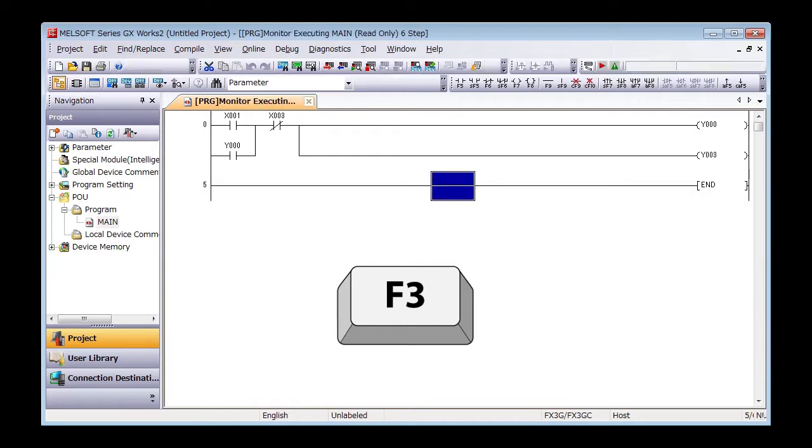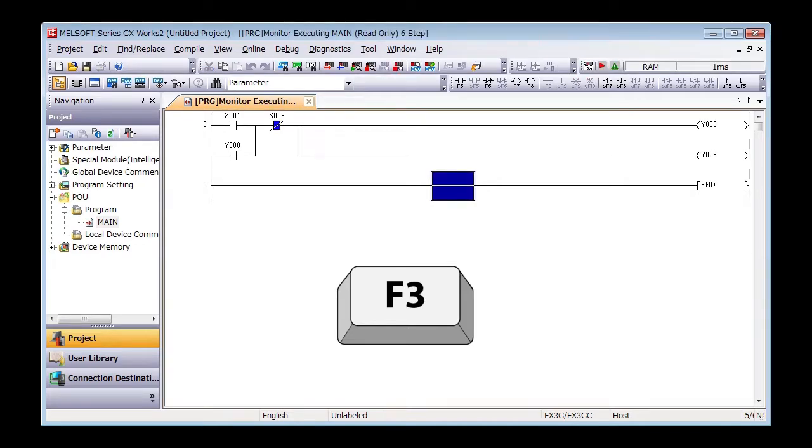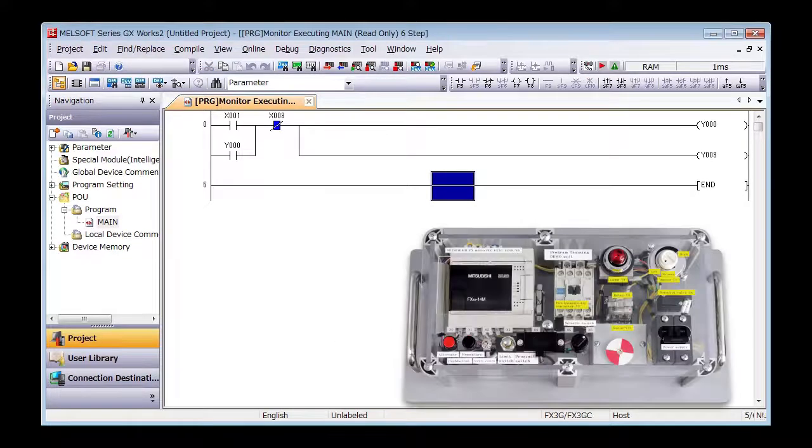Let's check on GXworks2. Press F3 on the keyboard. The monitor mode should start. Press x1, and the output should turn on.